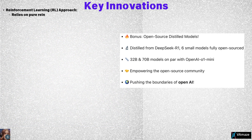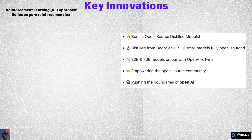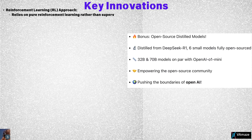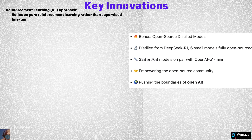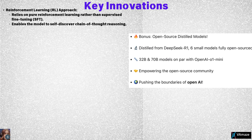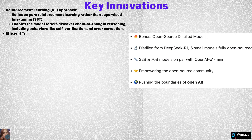First, DeepSeek relies on a pure reinforcement learning approach rather than supervised fine-tuning. This enables the model to self-discover advanced reasoning capabilities, including chain-of-thought reasoning, self-verification, and error correction, all through trial and error.